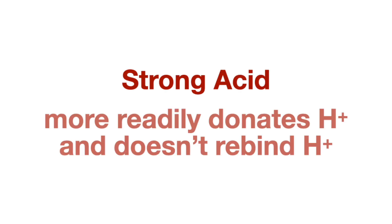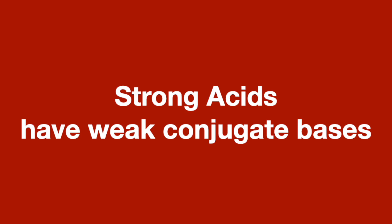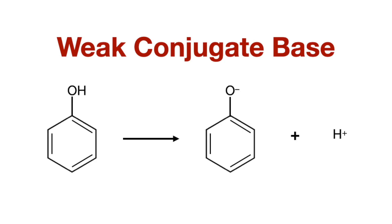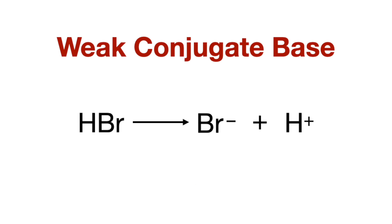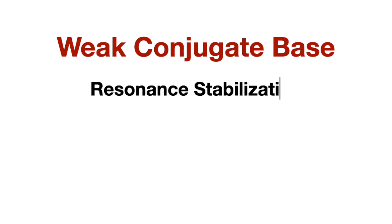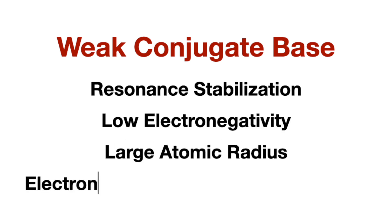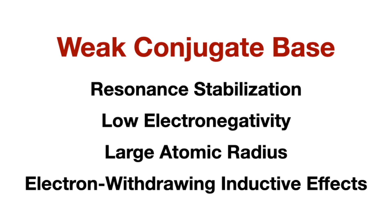Remember, a strong acid is one that easily releases a proton and never rebinds it. With regard to resonance stability, a strong acid has a resonance-stabilized conjugate base, and the more resonance, the stronger the acid. You've heard the rule that every strong acid has a weak conjugate base, and the stronger the acid, the weaker the conjugate base. This particularly means that the conjugate base cannot rebind the acid or the proton, leaving the acid in solution, making for strong acidic conditions. To help identify weak conjugate bases, look for resonance stabilization, low electronegativity, large atomic radii, and the presence of electron-withdrawing inductive effects — pretty much all the things that make an acid a strong acid.